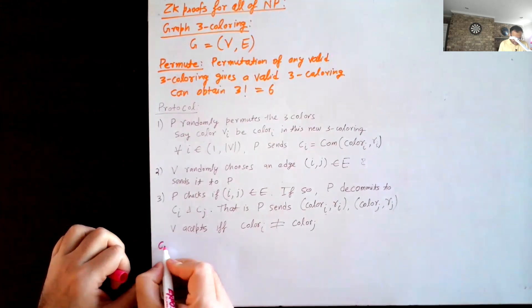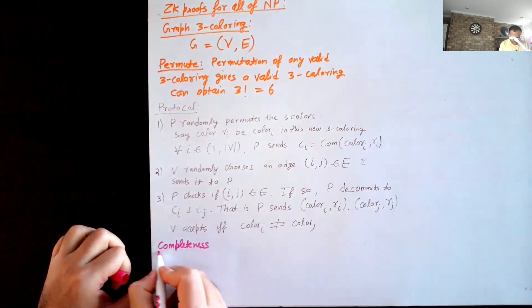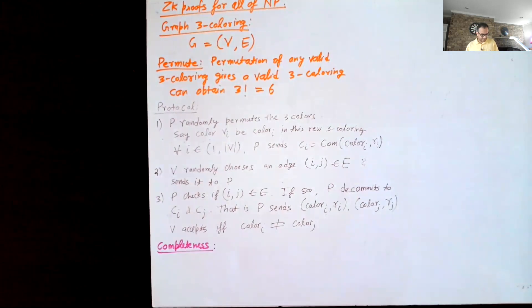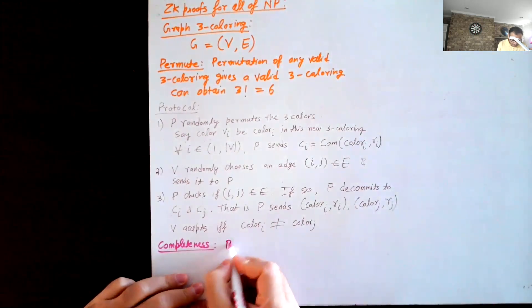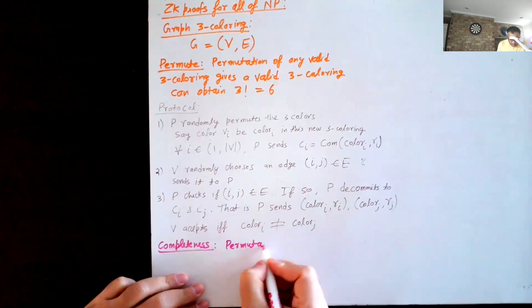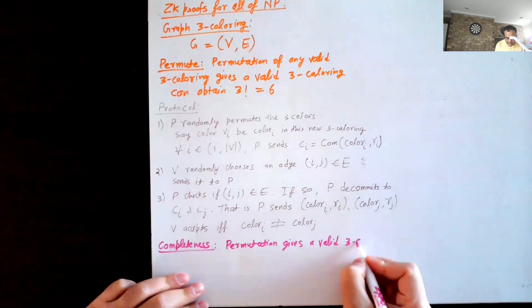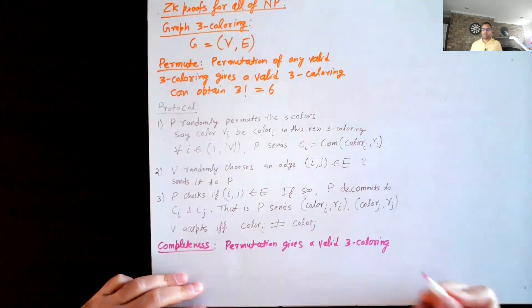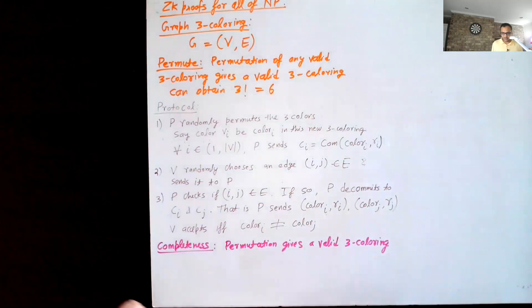Now let's try to prove the various properties. Completeness is easy to see: a permutation gives another valid three-coloring, and if the three-coloring which the prover committed is valid, then regardless of which edge the verifier decides to check, the colors would indeed be different. That just follows from the definition of three-coloring.